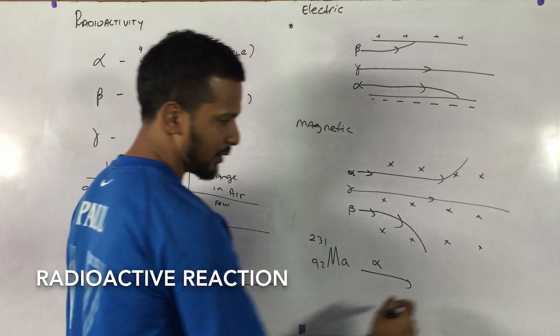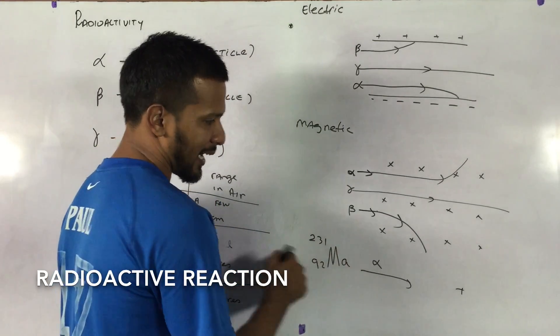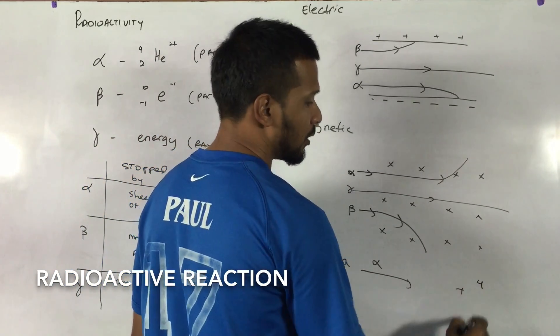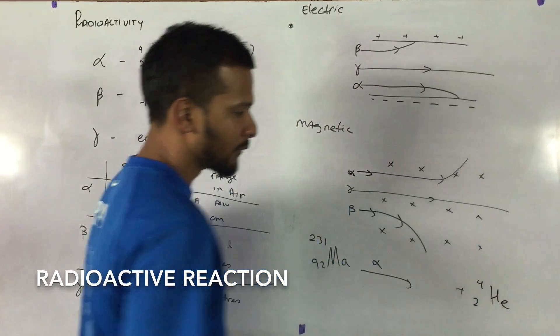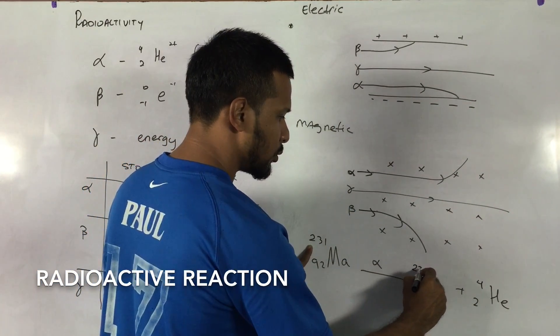If it loses an alpha particle, then an alpha particle is taken out of this. So an alpha particle is what? 4, 2, H, E. So if I take 4 out of here, what will I get?